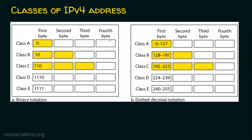IPv4 addresses are 32 bits long. For Class A, the first bit of the first octet — the most significant bit — is zero. If the first two bits of the first byte are 1,0, then it belongs to Class B. If the first three bits are 1,1,0, it belongs to Class C. If the IPv4 address starts with 1,1,1,0, then it is Class D.